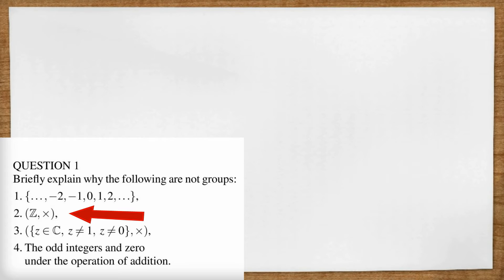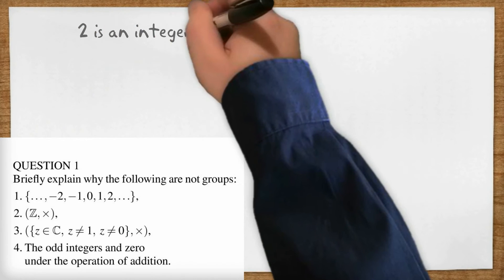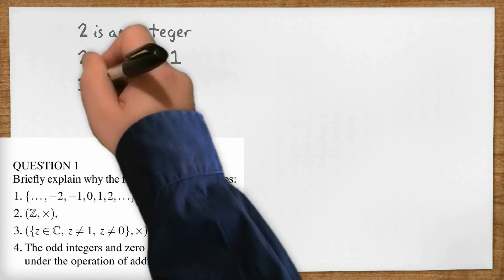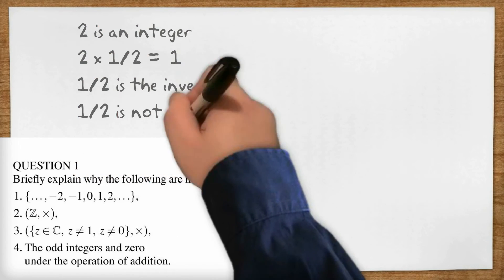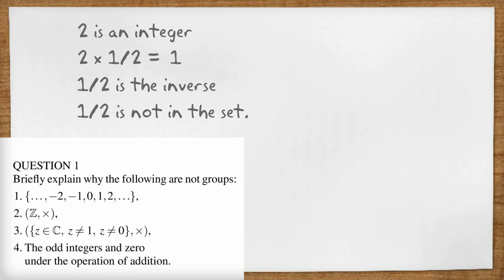On to part two, here we have that funny symbol Z which is the set of integers and the operation is multiplication. My thinking would be take the number two, that's an integer, two by a half equals one so a half is the inverse of two but a half is not an integer, it's not in the set. So an answer would be the integer two has no inverse.